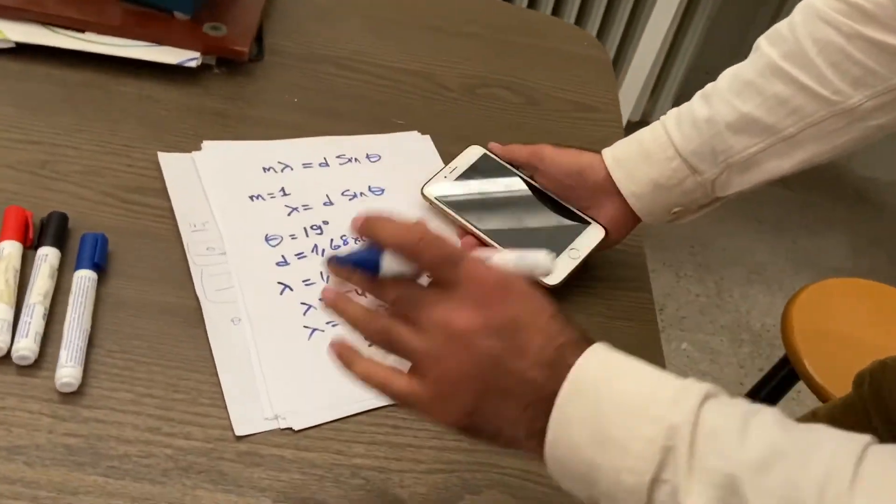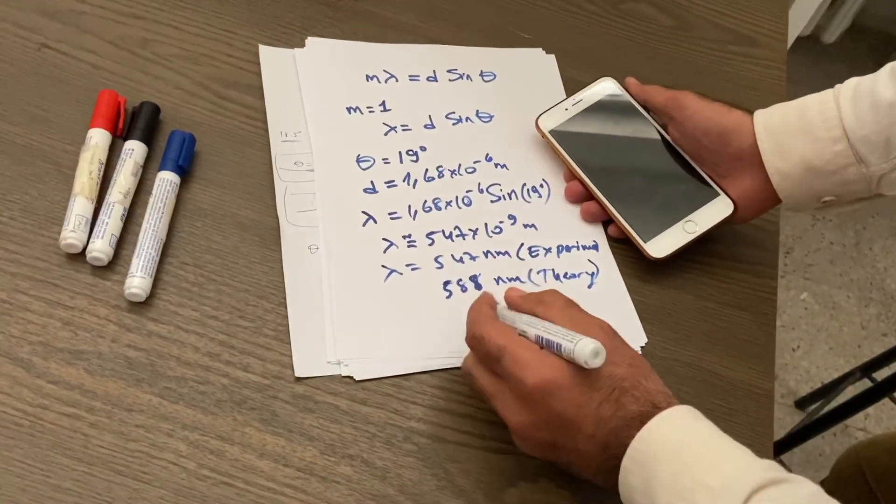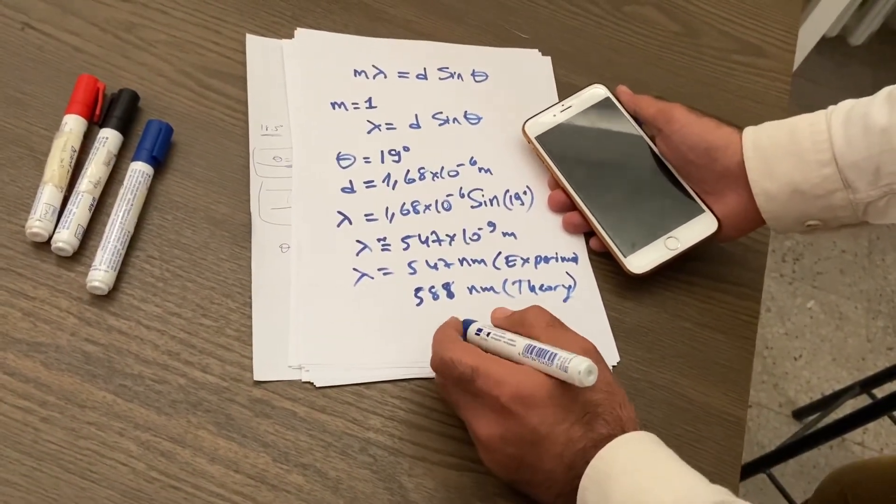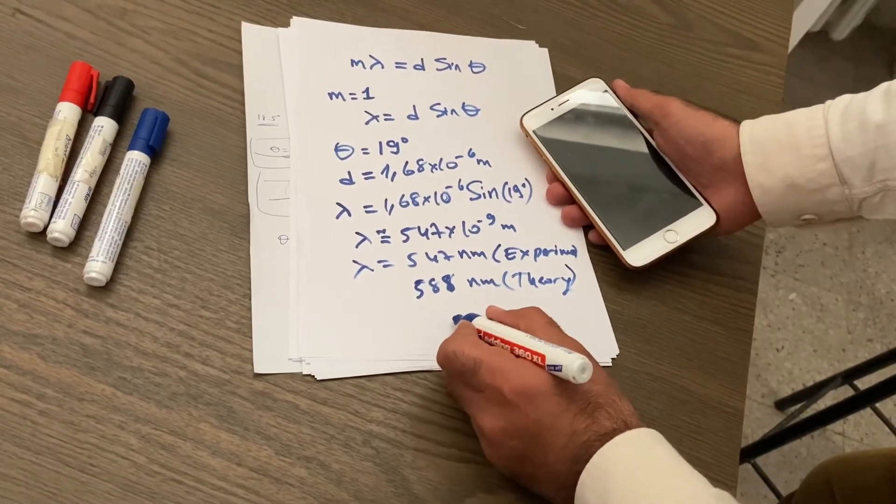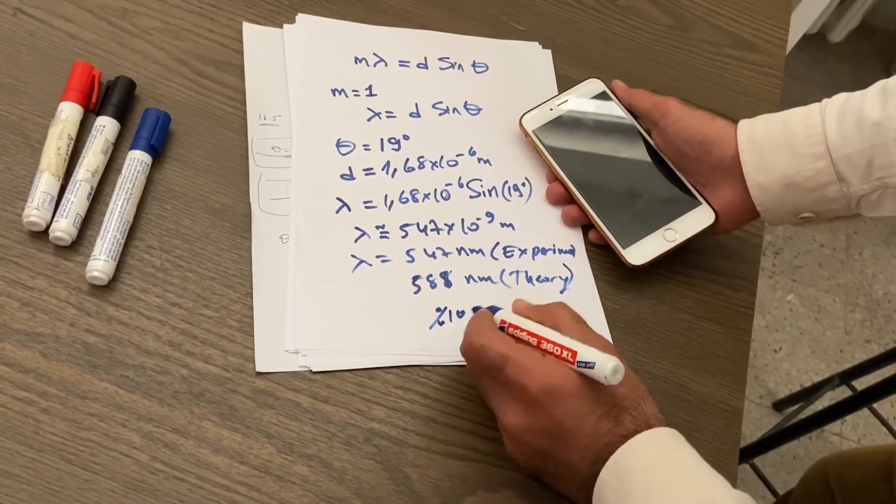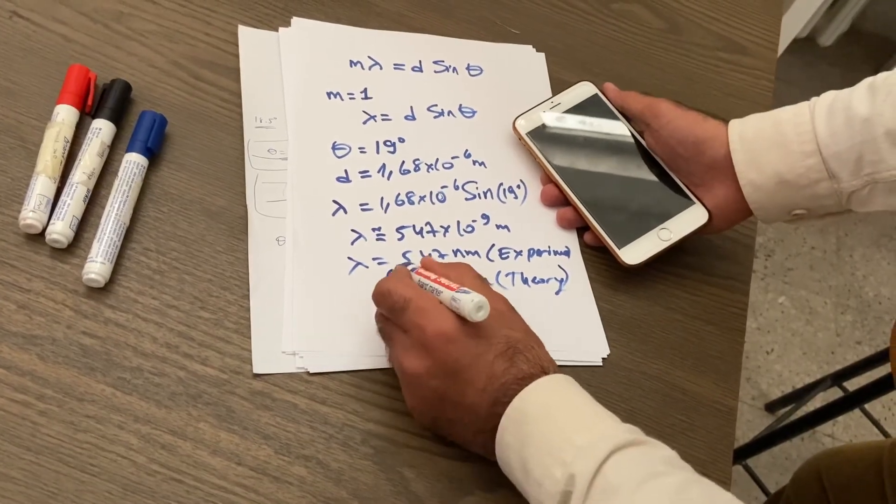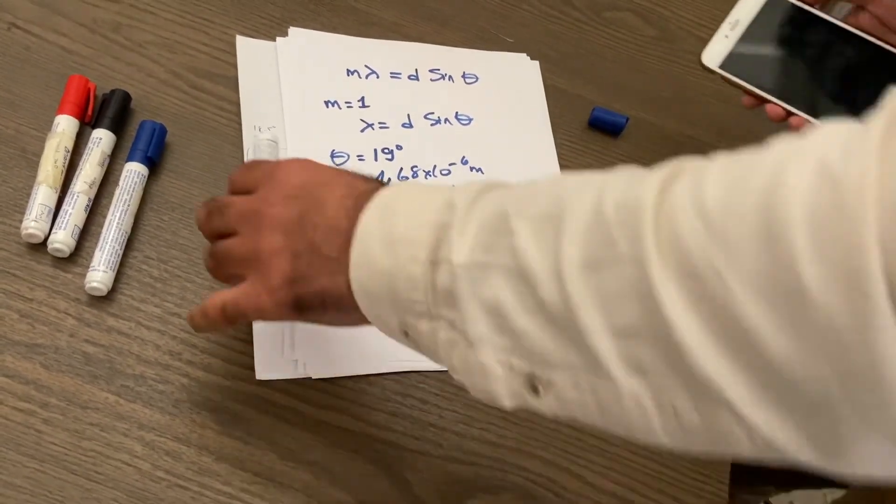So we have uncertainty of around—what—ten? No, eight. Let's say around ten percent uncertainty. So it's approximately similar.